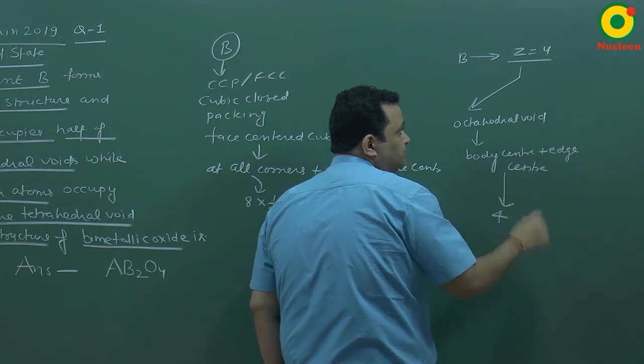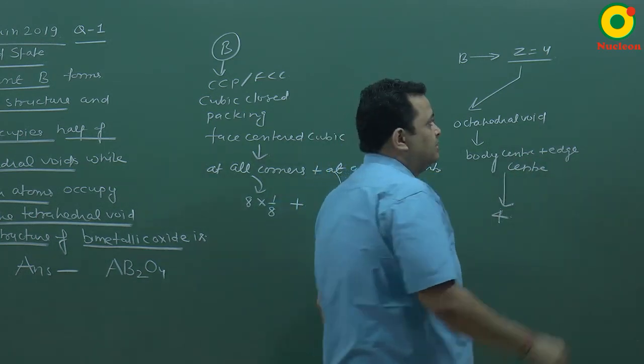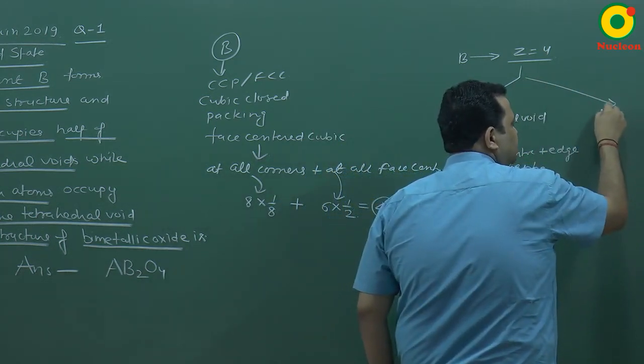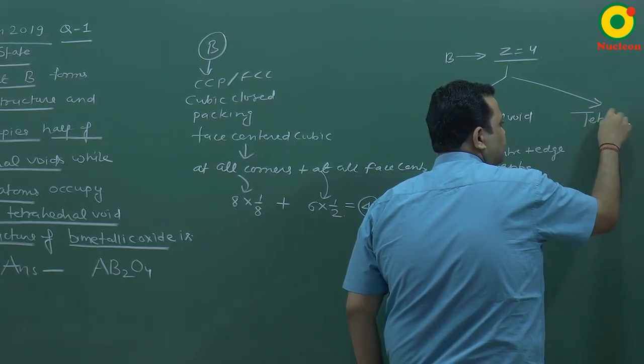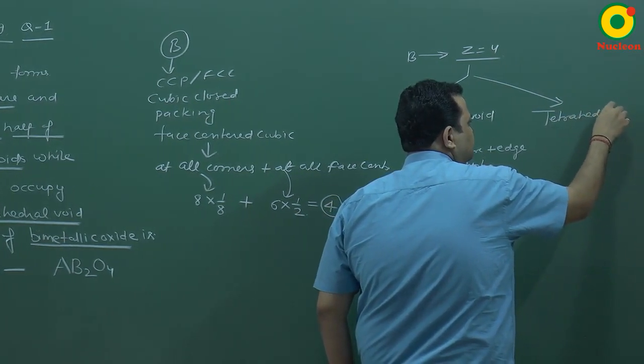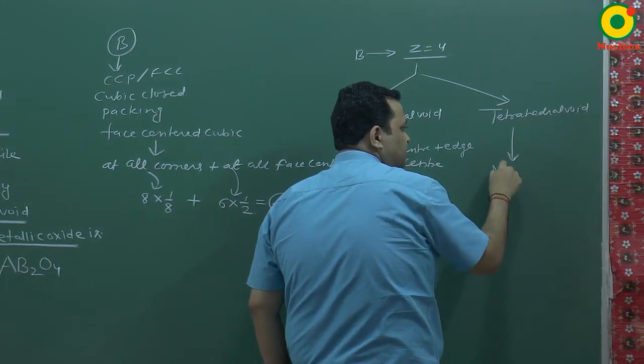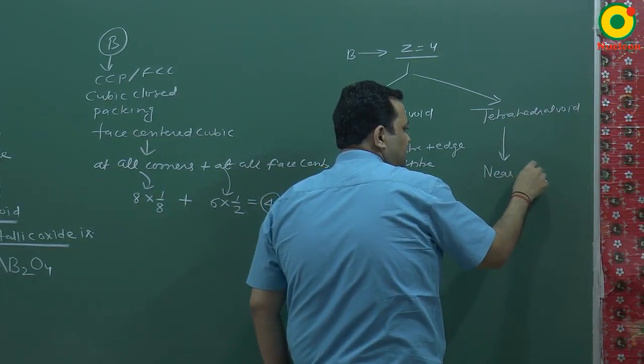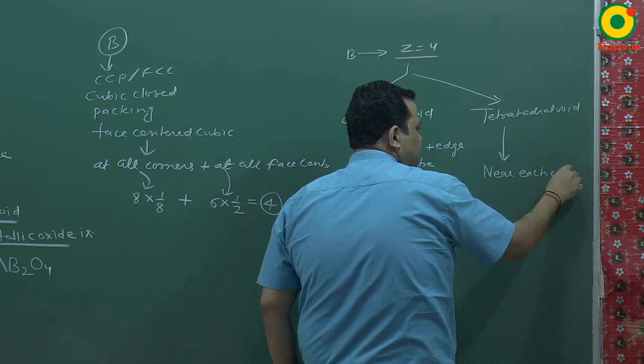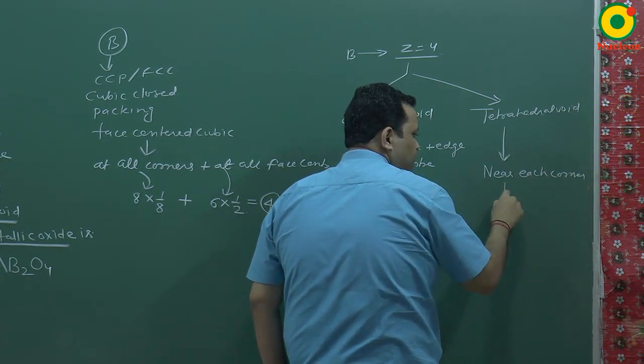These are tetrahedral. Tetrahedral which are near each corner. Near each corner. This is how much is it? This is 8.